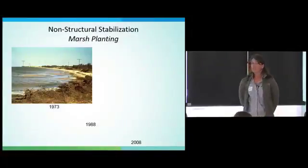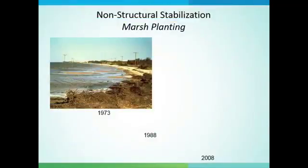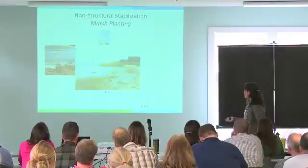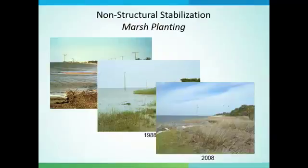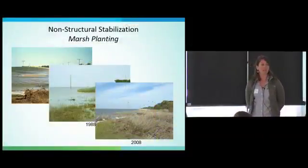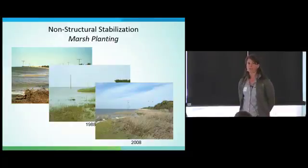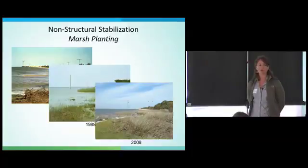This site in Currituck Sound at the Army Corps of Engineers Duck Research Station was experiencing erosion, with concern about impacts to the roadbed and infrastructure. They decided to experiment with shoreline stabilization by repeatedly planting marsh grasses over several years. The marsh grasses eventually took hold on sand flats and created a contiguous marsh — with no grading, no fill, just repeated plantings. They were willing to wait and experiment before resorting to a hardened structure.